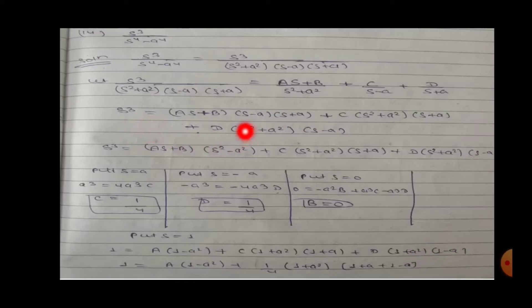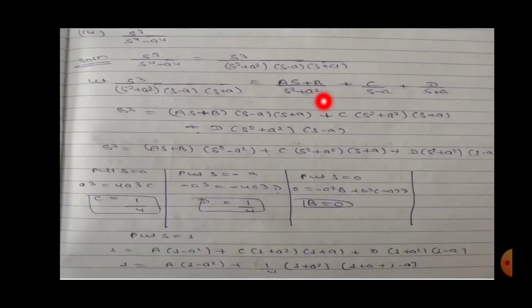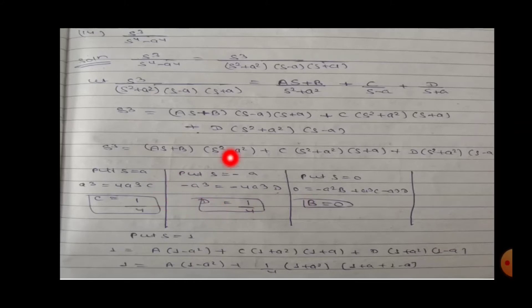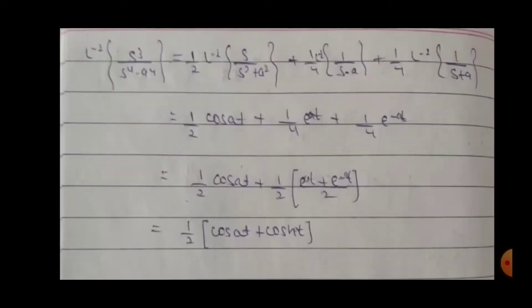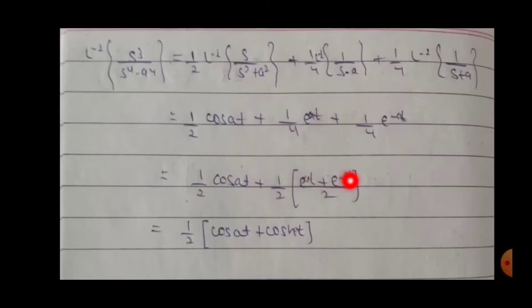Taking LCM and comparing coefficients, we get B equal to zero, D equal to one by four, C equal to one by four, and A equal to one by two. Substituting: one by two · s/(s²+a²) plus one by four · 1/(s-a) plus one by four · 1/(s+a). The Laplace inverse of s/(s²+a²) is cos(at), of 1/(s-a) is e^(at), and of 1/(s+a) is e^(-at). So the answer is one by two cos(at) plus one by two · cosh(at), since (e^(at)+e^(-at))/2 = cosh(at).